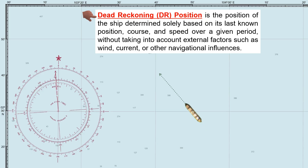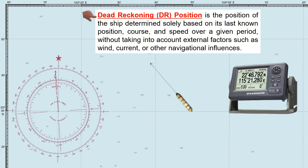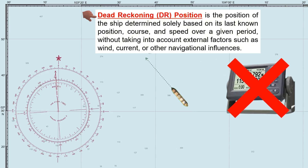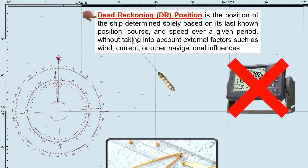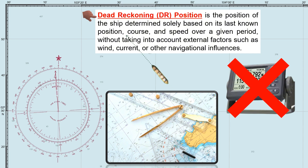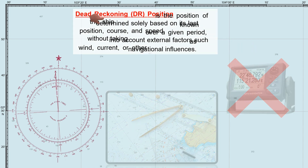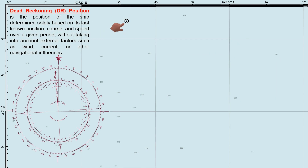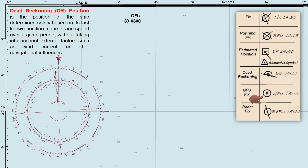Let's say that due to unforeseen circumstances, our GPS receiver on board is no longer operational and we're navigating on the high seas. In this situation, our first option is to determine the ship's position through dead reckoning. Let's start by assuming this is the ship's last known position — a GPS fix at 0800 hours, marked with the standard symbol for GPS fixes.